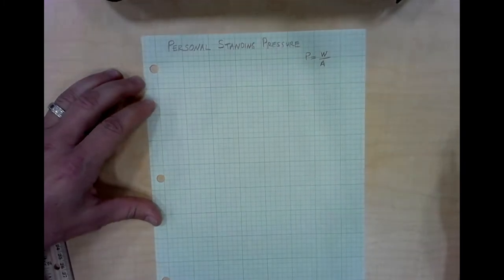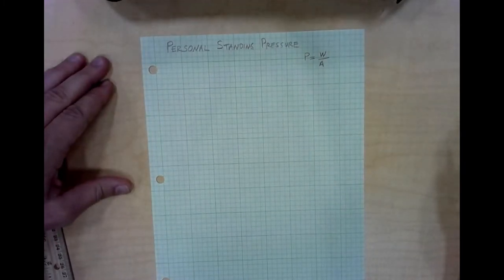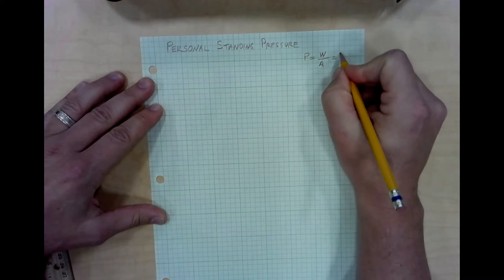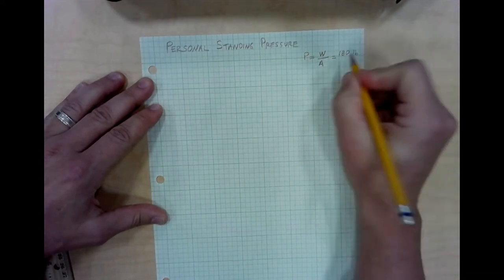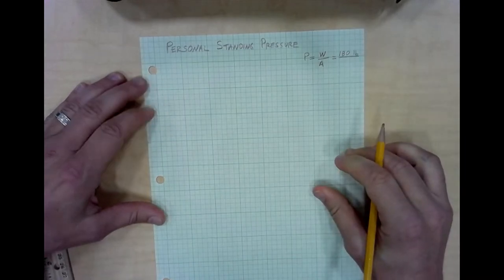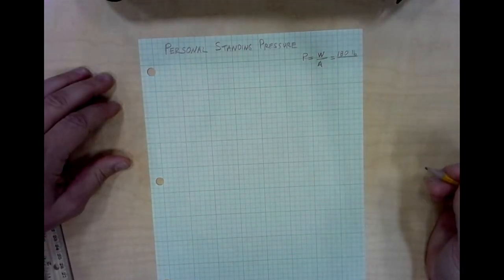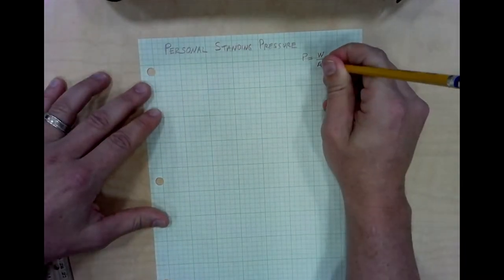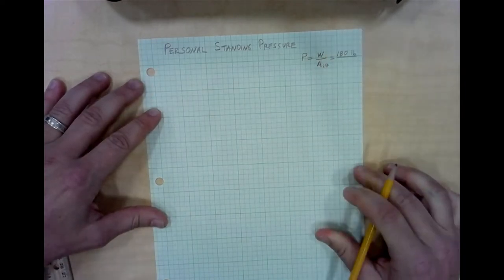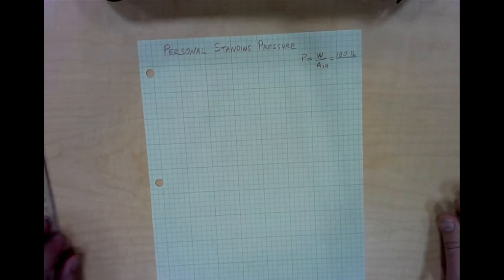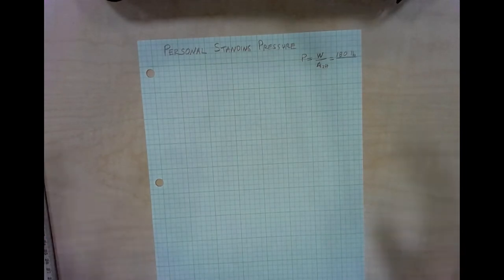In order to calculate your personal standing pressure you'll need to know your own weight. For example my weight might be 180 pounds today. And then we'll also need to know the area of you standing on two feet. So I'm going to put area of two feet here as something we need to calculate. And that's what we're going to do next is go ahead and calculate the area that we are in contact with the ground.